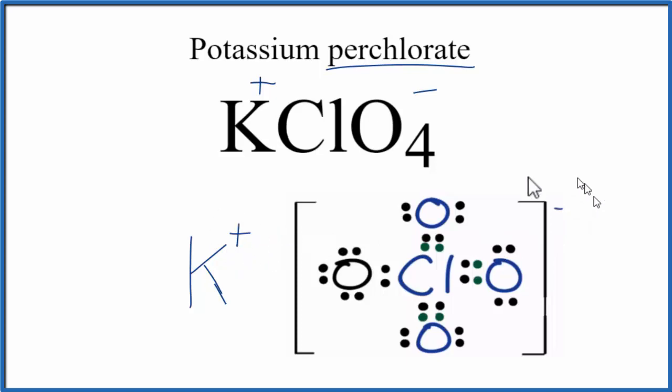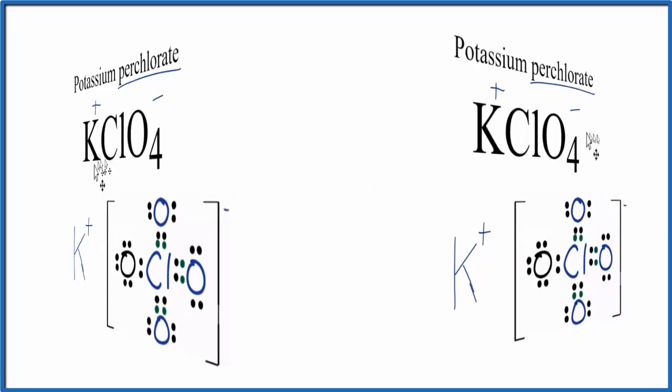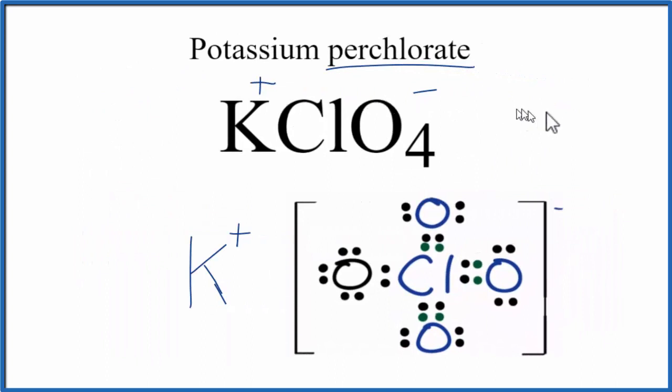Because we have a positive and a negative, they're attracted together, and this is the Lewis structure. Remember, the positive and the negative, the net charge for that is going to be zero. So this will be a neutral molecule, but the ions here will have charge, and they'll be attracted to each other.